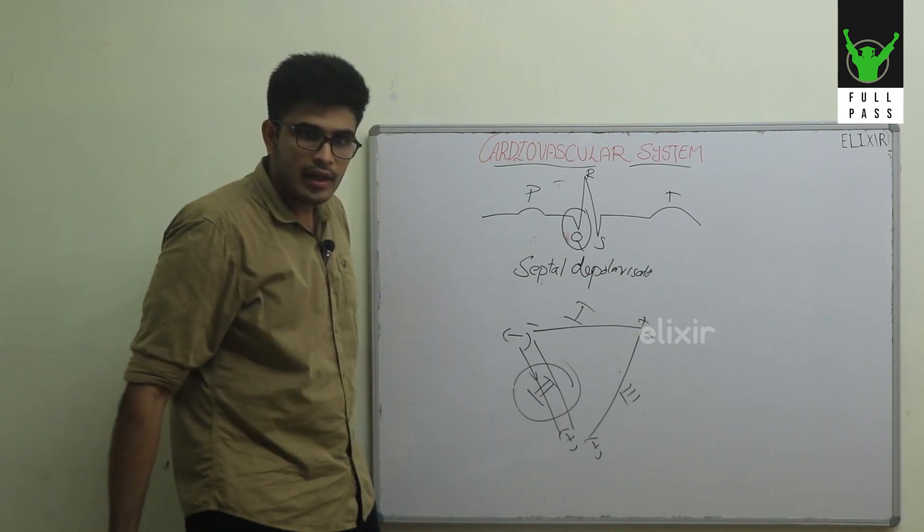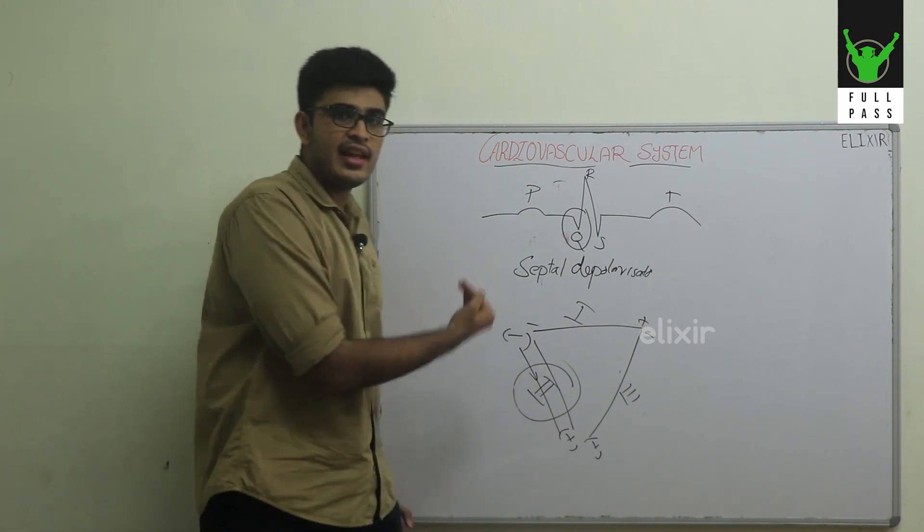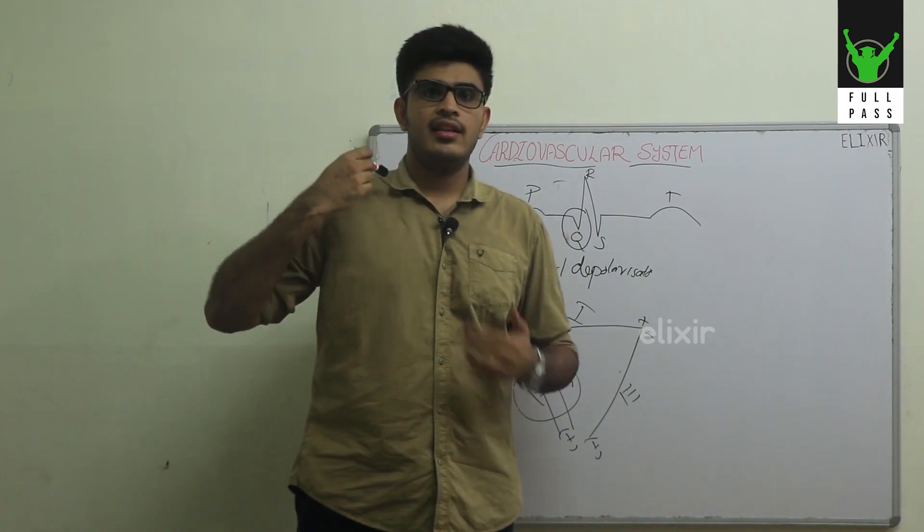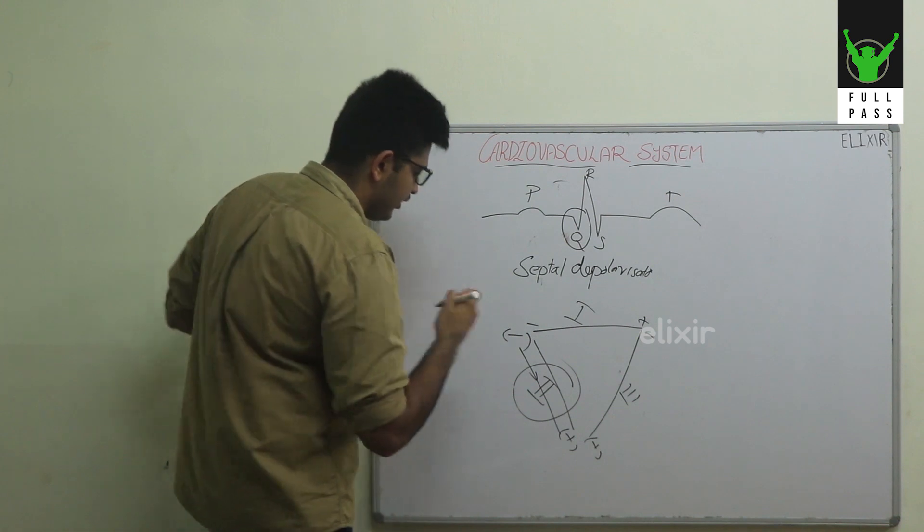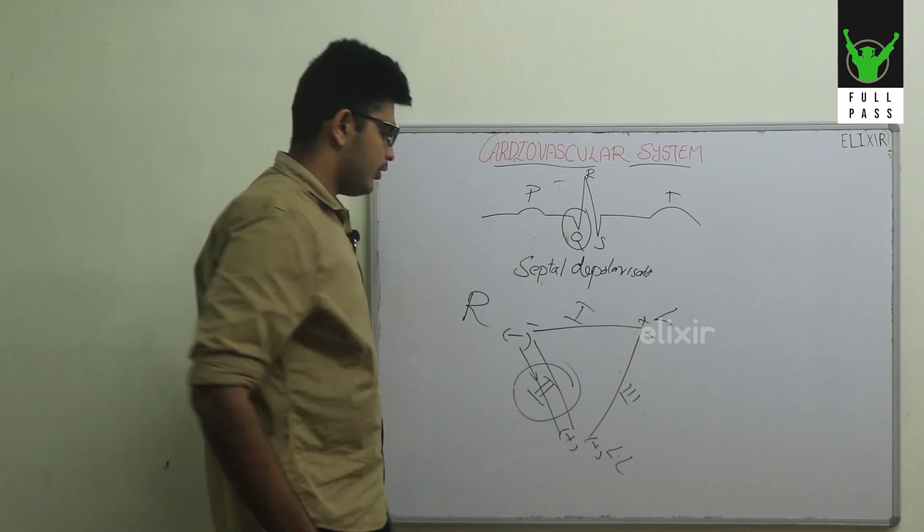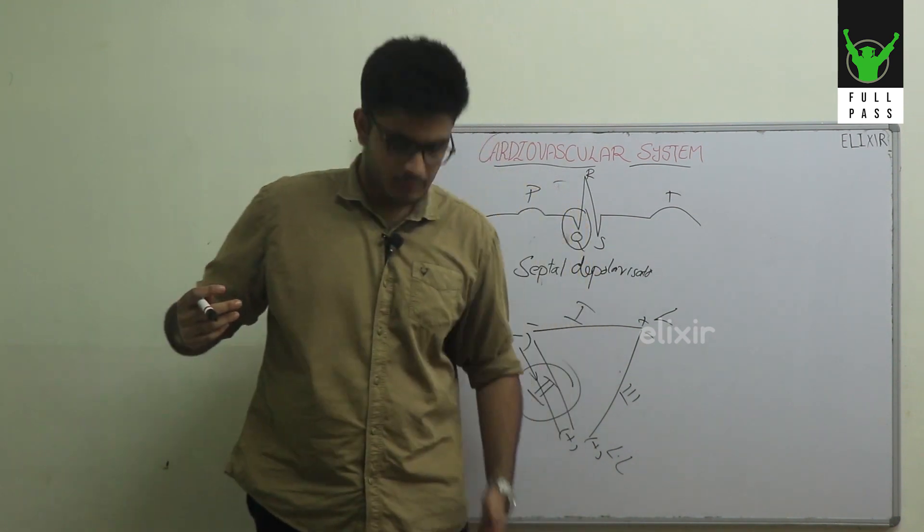So this direction is from the right arm - this represents the right arm, left arm, the left leg - from the right arm towards the pubic symphysis or the left leg.